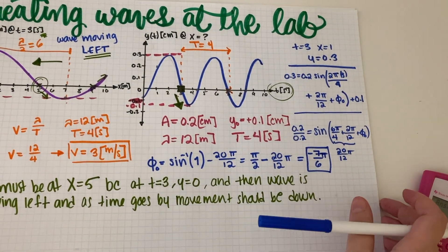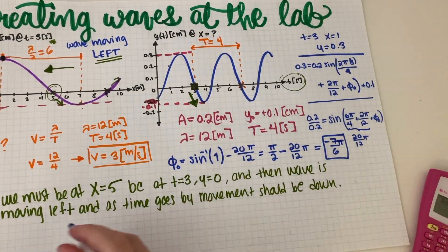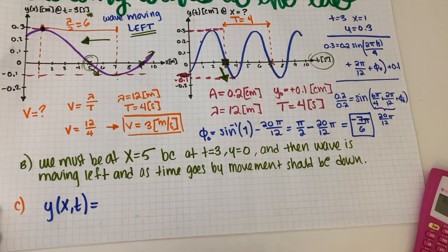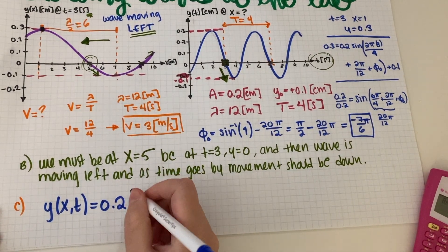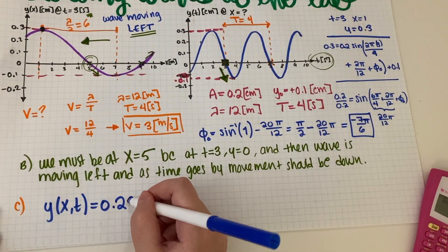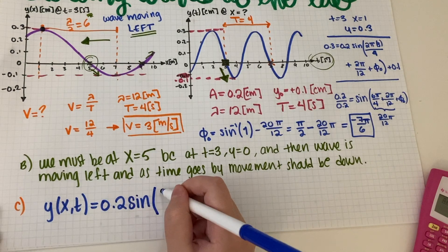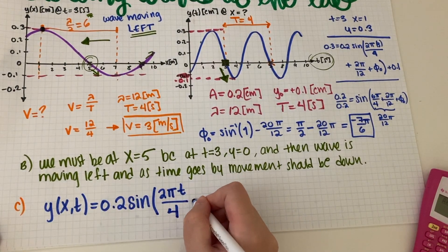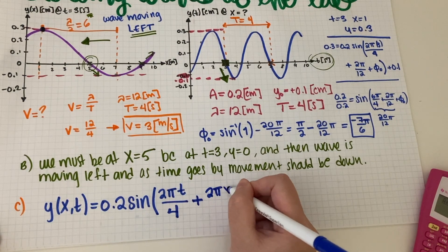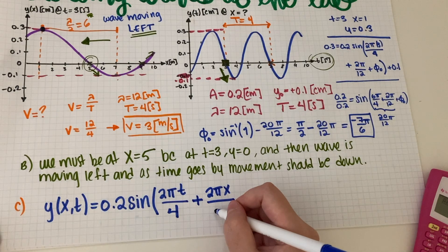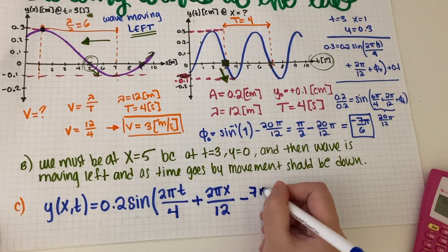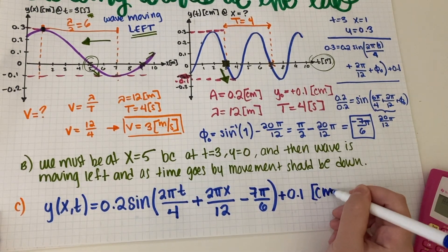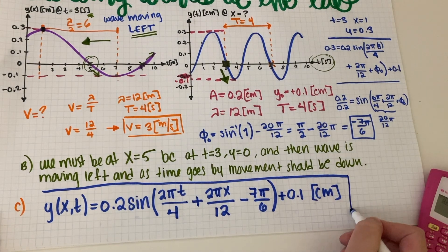Now that we have everything, let's write the final answer. y(x, t) equals 0.2 centimeters times sine of (2πt/4 + 2πx/12 − 7π/6) plus 0.1 centimeters. The plus sign in front of the x-term is because the wave is moving left. The entire answer is in centimeters.